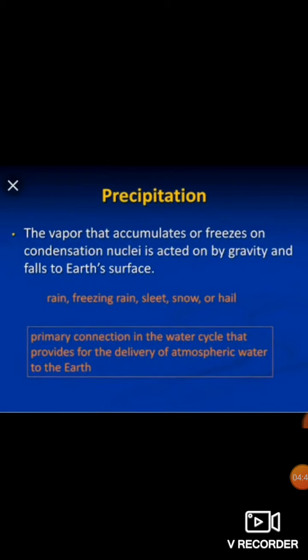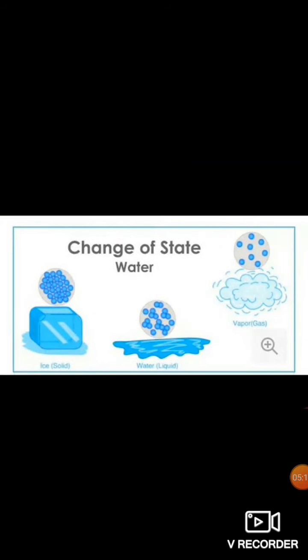The vapor that accumulates or freezes through condensation is acted on by gravity and falls on the earth's surface. In simple words, the falling of water back on the ground in the form of rain, freezing rain, sleet, snow, and dew is called precipitation.